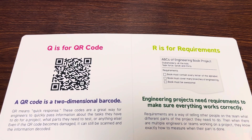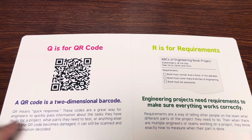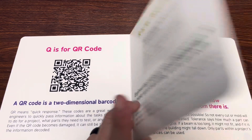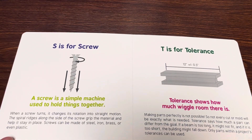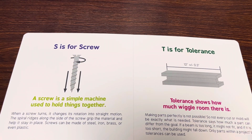R is for requirements. Engineering projects need requirements to make sure everything works correctly. S is for screw. A screw is a simple machine used to hold things together.